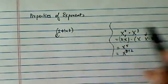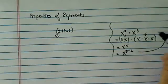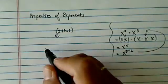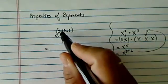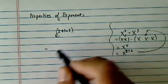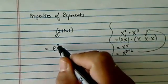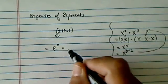So the same thing here, we're going to go backward. In other words, if I have two exponents adding there, I'm going to split it up into multiplication.